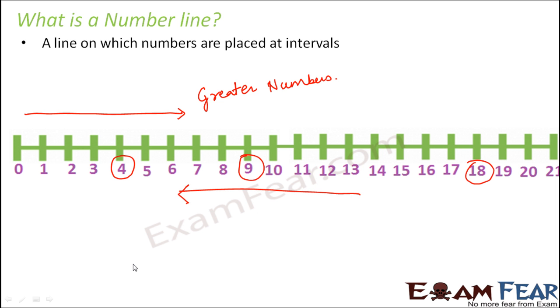Similarly, as you move towards the left on the number line, what happens? As you move towards left, you are moving towards smaller numbers. So 4 lies to the left of 9, which shows that 4 is smaller than 9. 9 lies to the left of 18, so 9 is smaller than 18.